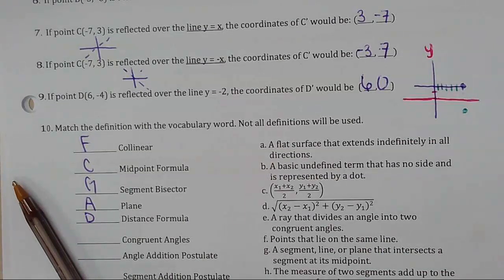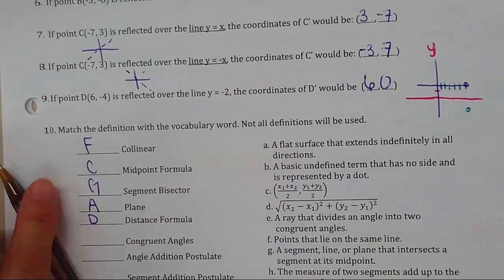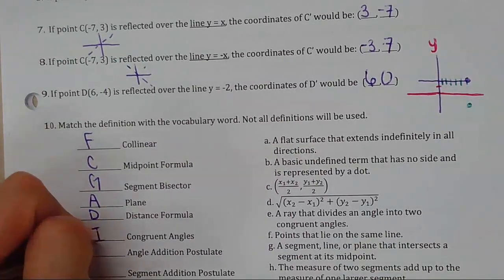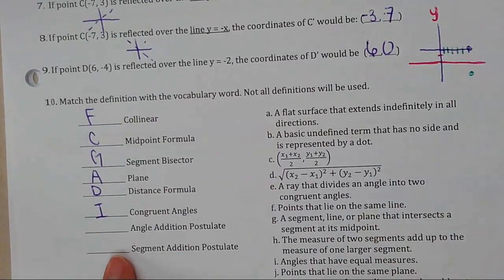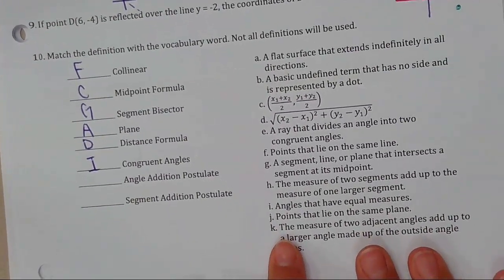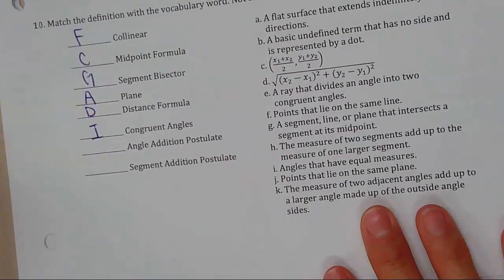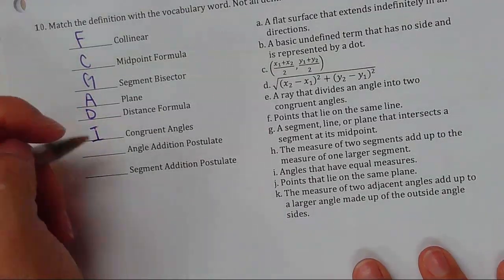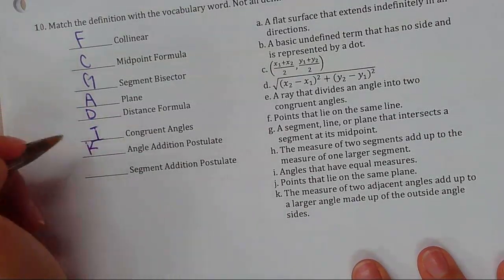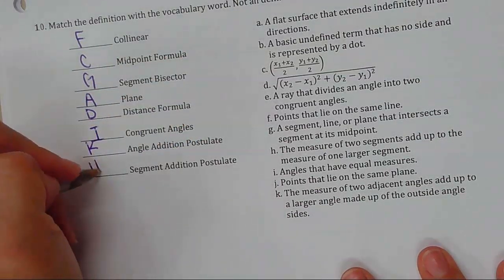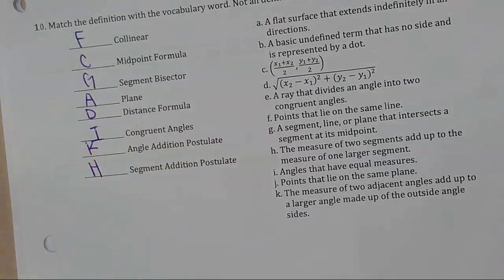The distance formula is d = √[(x2 − x1)² + (y2 − y1)²]. Congruent angles are angles that have equal measure. The angle addition postulate is the measure of two adjacent angles that add up to a larger angle. Segment addition postulate: the measure of two segments adds up to the measure of one larger segment.